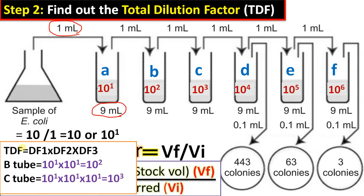Remember: the total dilution factor is the product of the individual dilution factors of each successive test tube. The plate we selected has 63 colonies, and the corresponding culture is test tube E with a total dilution factor of 10^5. We will use this dilution factor for further calculation.